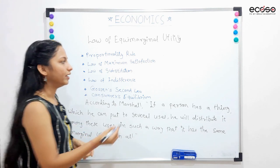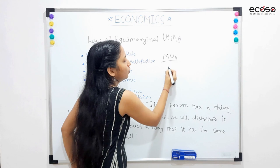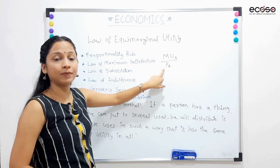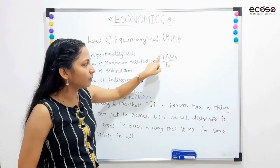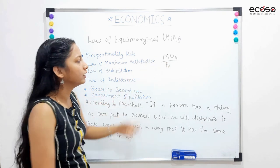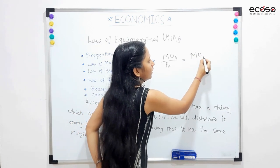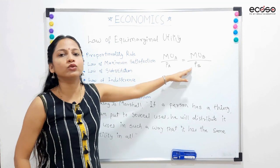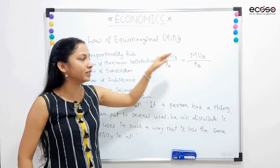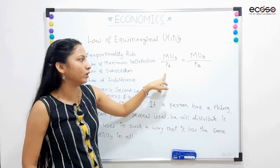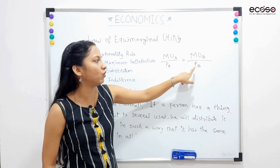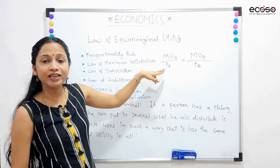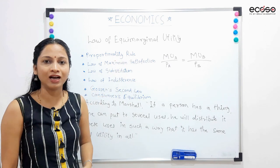Aur iske liye, main kya karungi? Main dono commodities ki marginal utility uski price se match karke dekhungi. Means, main dekhungi ki marginal utility of A divided by price of A — suppose dress hai — toh dress se jitni marginal utility milti hai, woh divided by dress ka price, is equals to marginal utility of B divided by price of B. Agar ye ratio equal ho jaata hai, woha pe mujhe maximum satisfaction milega. Isi ratio ki wajah se isse proportionality rule kaha jaata hai.